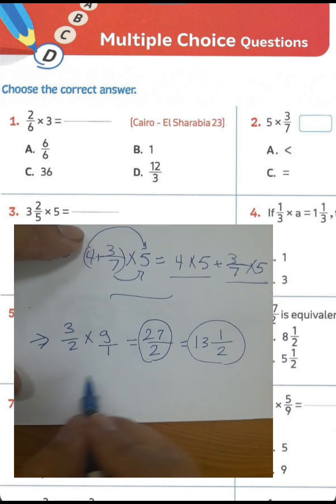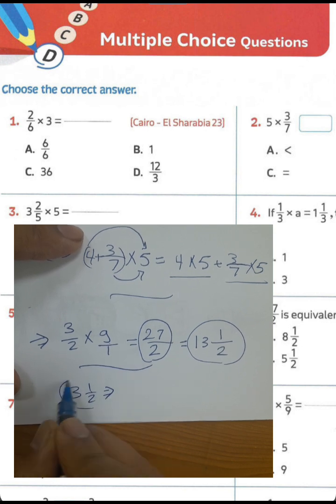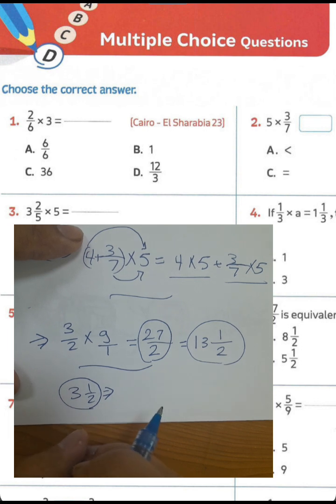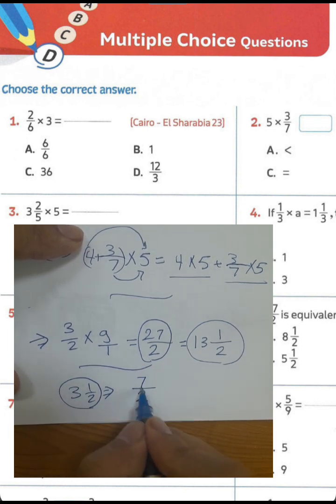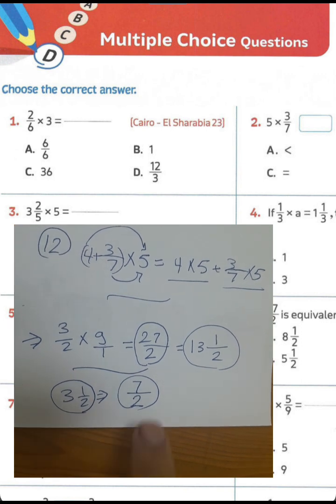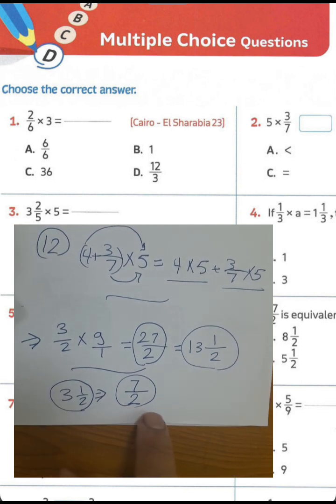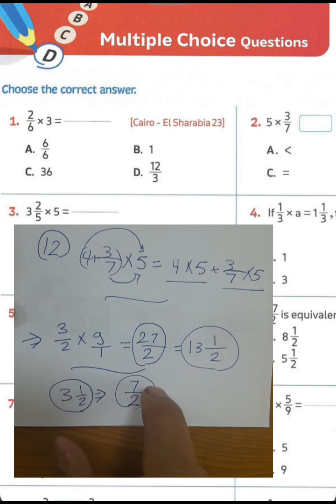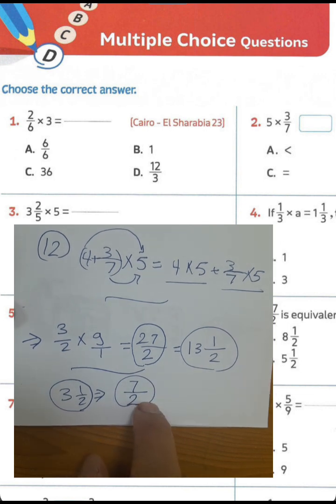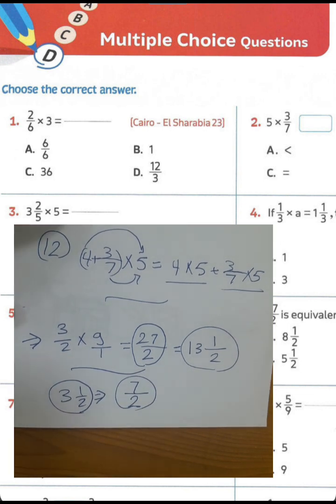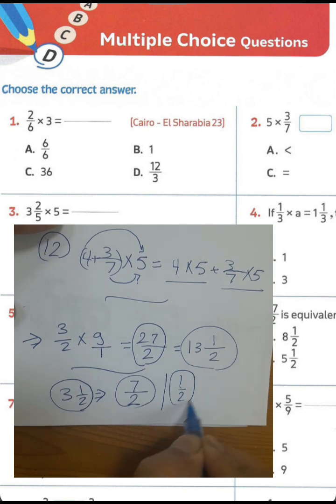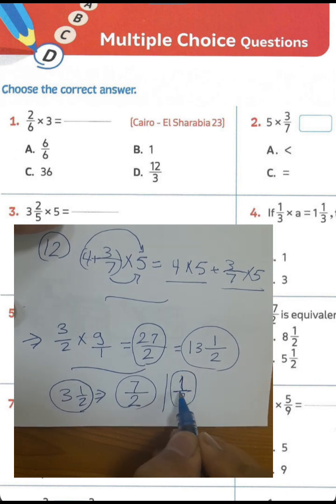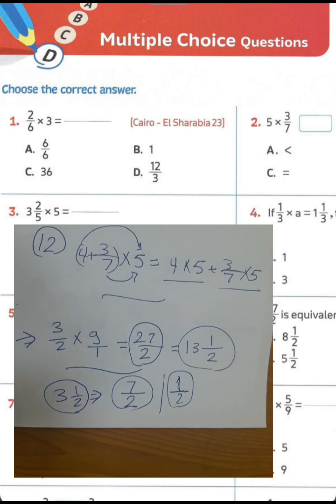What about the inverse — converting a mixed number to an improper fraction? For 3 and a half: the denominator is 2, and 2 times 3 equals 6, plus 1 equals 7, so the result is 7 over 2. This is called an improper fraction, meaning the numerator is greater than the denominator. When the numerator is less than the denominator we call it a proper fraction.